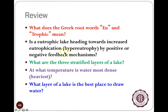What are the three stratified layers of a lake? When a lake stratifies in the summer — and also in winter in this part of the world — the top layer is called the epilimnion. The middle layer is the thermocline, or the zone of rapid temperature change, also called the metalimnion. The deepest, coldest layer below everything is the hypolimnion.